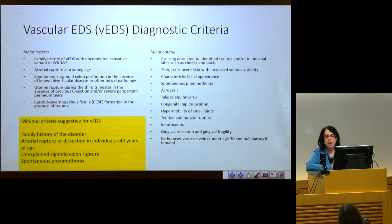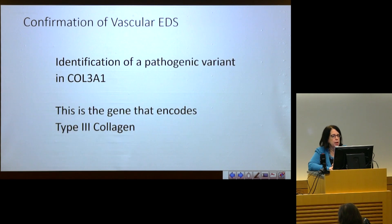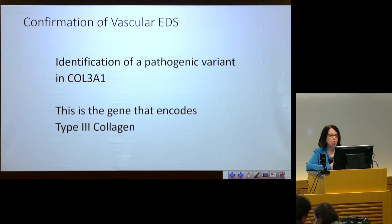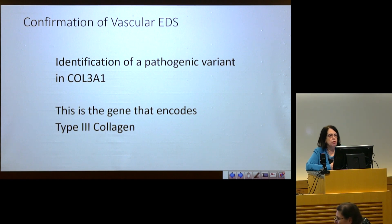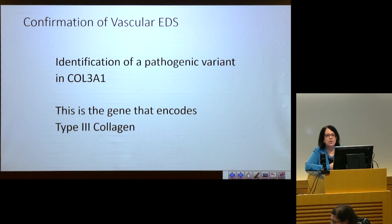Dr. Byers and his committee did not give us minimal clinical criteria to establish a diagnosis, because really the identification of a pathogenic variant in type III collagen — the gene encoding type III collagen, which is called COL3A1 — establishes the diagnosis. If you think about the possibility of vascular EDS, this should really be tested for.